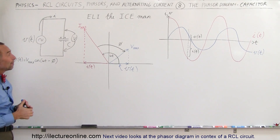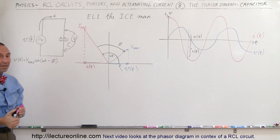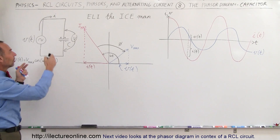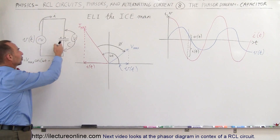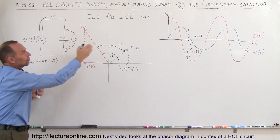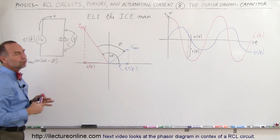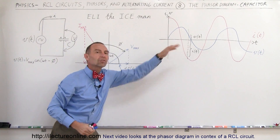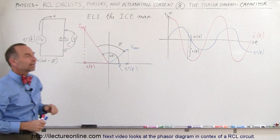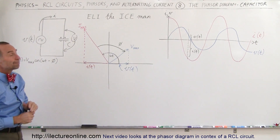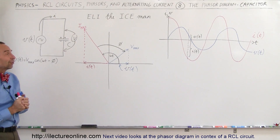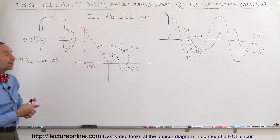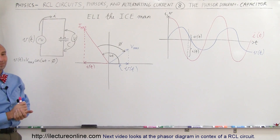Hopefully that gives you a much better idea of what a phasor diagram is, how it represents a circuit with a capacitor in it, and how it relates to the usual drawing of voltage and current on an oscillating cycle. Hopefully that makes sense and you understand what a phasor diagram is for a capacitive circuit.